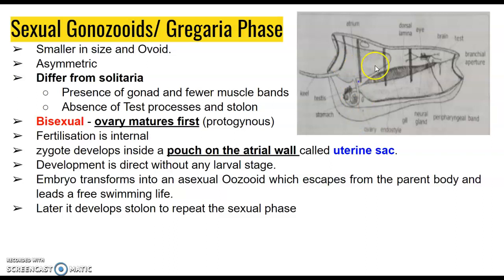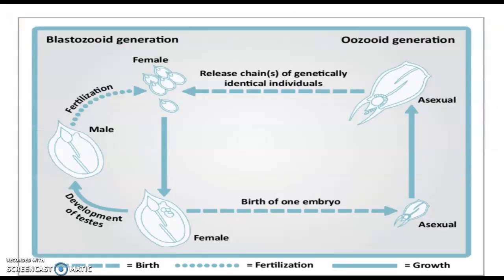They have a very limited number of muscle bands compared to the solitaria. There is no test process and no stolon in the gregarious phase. The organism is bisexual at this stage and the ovary develops first, a phenomenon called protogyny, and fertilization is internal. The zygote develops in a small bag-like structure in the atrial wall called the uterine sac. Development is direct, without any larval stage, and the embryo transforms into asexual oozooids that escape from the parent body and lead a free-swimming life.